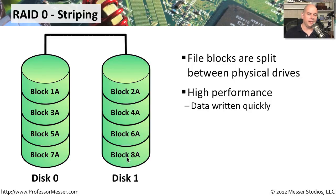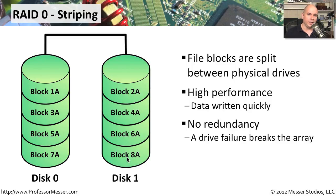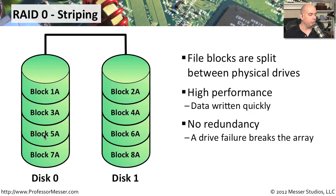The performance on RAID 0 is very high — you get a lot of throughput because you're writing half the information to one disk and simultaneously writing half to another, effectively doubling write speed. Unfortunately, if you lose one of these disks there's no redundancy. You've lost half your data with no way to recover it, so you'd better have a very good backup.